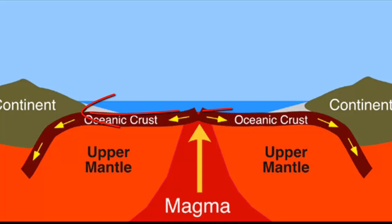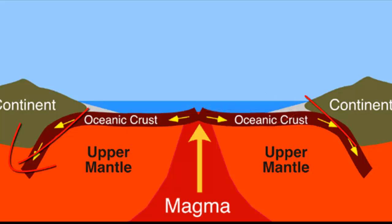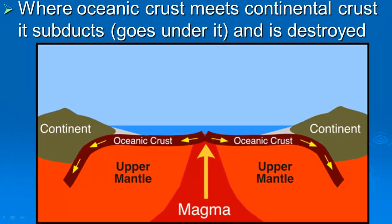As the tectonic plates move, oceanic crust will oftentimes encounter continental crust. Because it's more dense, it actually goes underneath — or subducts under — the continental crust and gets pushed down into the asthenosphere, which is hot and molten, and melts again. So oceanic crust is constantly being created and destroyed.